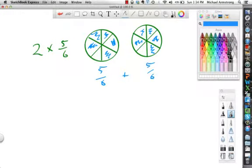And we have one, two, three, four, five, six, seven, eight, nine, ten. Ten sixths. All right. So that's one whole pizza.